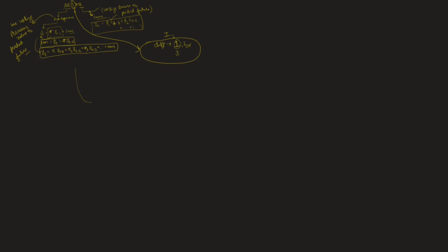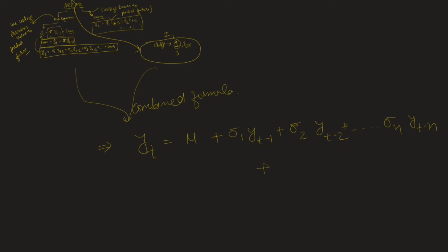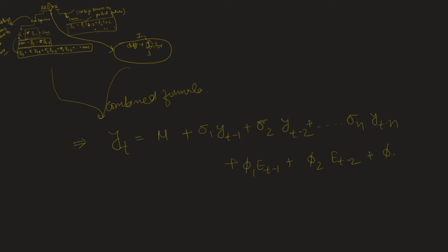Now let's write the combined formula for all three. YT = starting term + AR part: σ1·YT-1 + σ2·YT-2 + ... + σn·YT-n + MA error terms: φ1·eT-1 + φ2·eT-2 + φ3·eT-3. This is the combined formula for the ARIMA time series model.